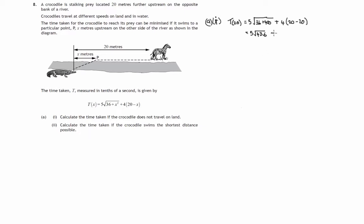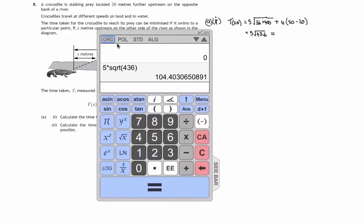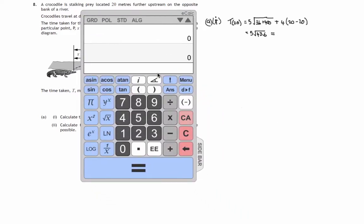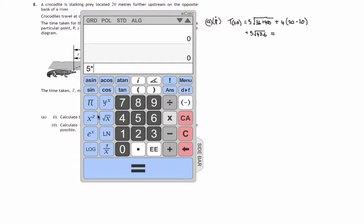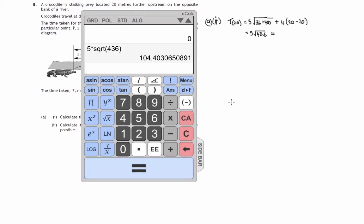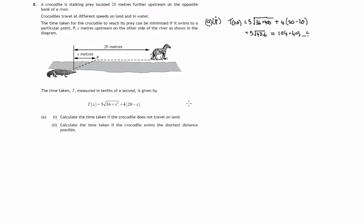We have 5 times the square root of 436, and this of course is 4 times 0, so that vanishes. Let's work it out: 5 times the square root of 436 comes to 104.403 and so on, which is approximately measured in tenths of a second. So this is 104 tenths of a second, which is approximately 10.4 seconds. That's rounded to one decimal place.